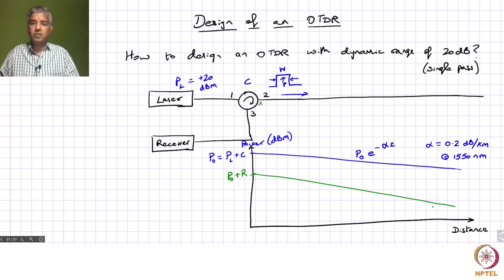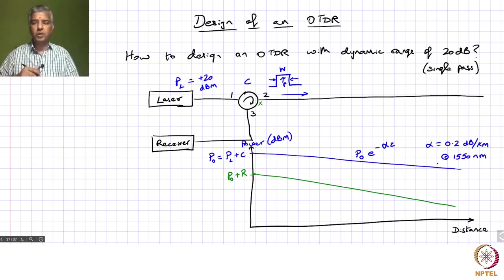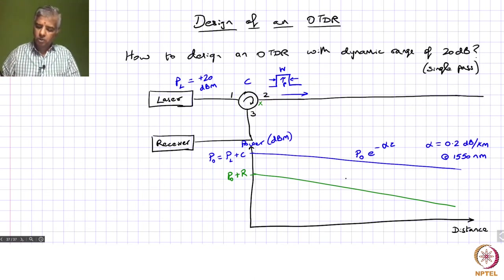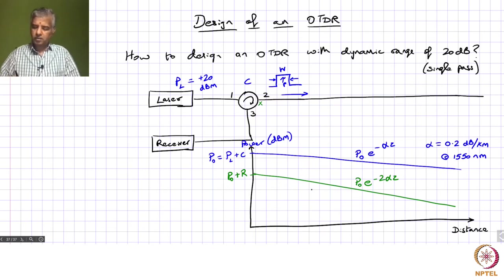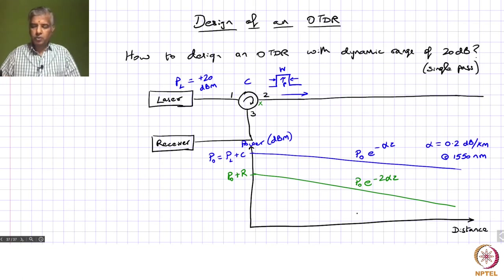The slope at the receiver is twice the slope of the forward power decay. This is because you are losing power both as the pulse propagates toward the distant location and as the back-reflected light returns to the receiver. So the received back-scattered power is P_naught * e^(−2αz), corresponding to twice the loss — this is the round-trip propagation loss. In dB scale, quite low power levels result, so you need a very sensitive detector.